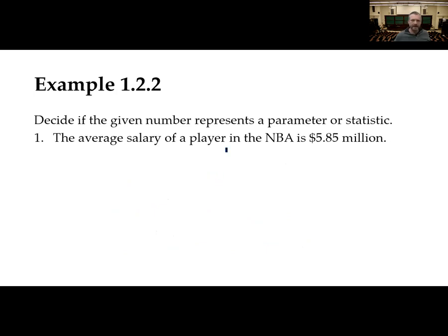Here's an example. Determine if this number represents a parameter or a statistic. The average salary of a player in the NBA is $5.85 million. Well, there's no indication here that we've taken only some NBA players and found their salary. And because of that, we can assume that that $5.85 million actually came from the entire population of salaries. And so therefore, that number is a parameter. And I want to reiterate, parameter is a number. That $5.85 million is a parameter. It's the average salary.